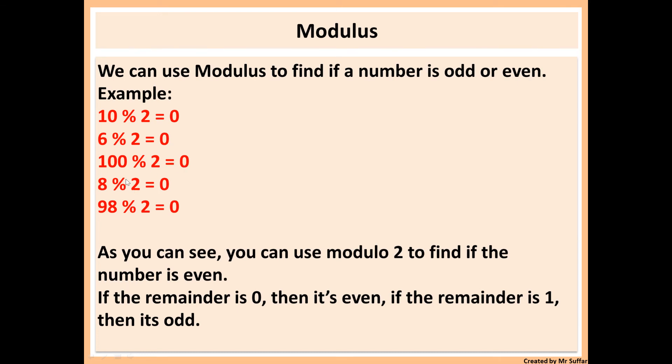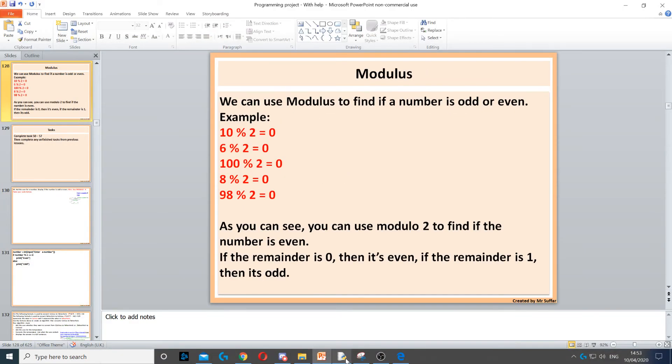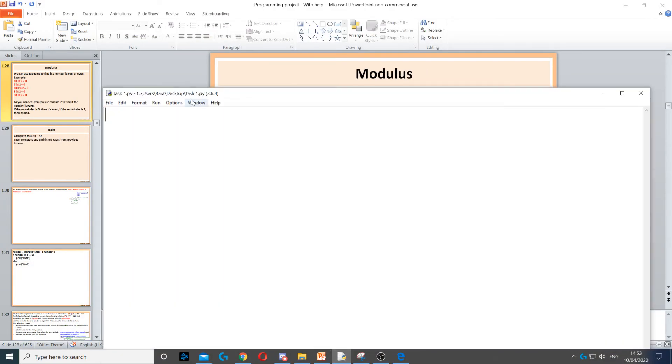So if you have an even number and you do that even number modulus 2, you'll always end up with 0. And then if you do any odd number modulus 2, you'll always end up with 1. So here we know that anything modulus 2 will give us 0, which is why we can find if the number is odd or even.